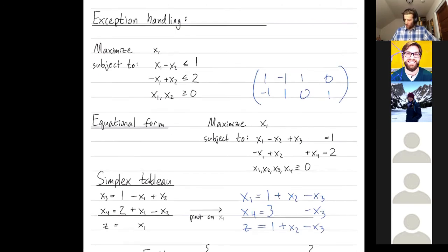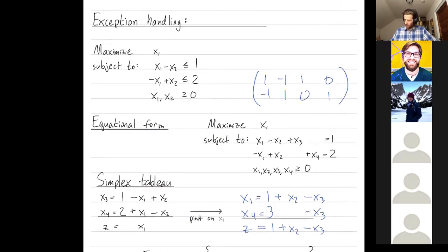Okay. So now what variable do I want to pivot on to increase this function? I want to pivot on x2 because by making x2 larger, I can make my optimization function larger. From the perspective of this equation, I can increase x2 as much as I want. Also, from the perspective of this equation, I can increase x2 by as much as I want. Right? So x2, I can increase by as much as I want.